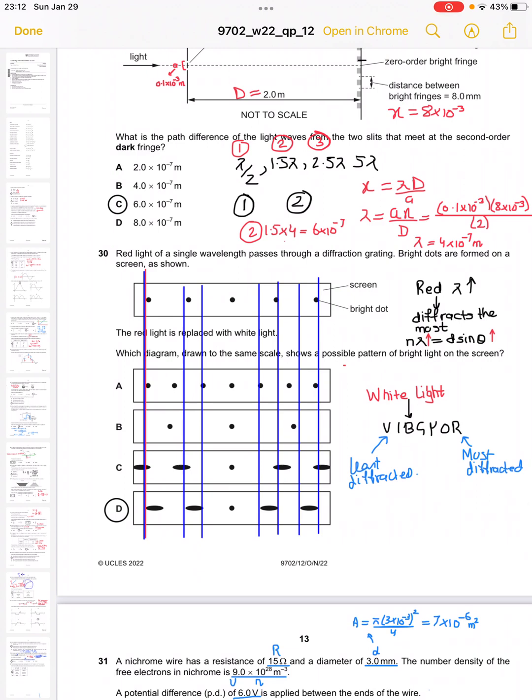Question 30 states that red light of single wavelength passes through a diffraction grating and bright dots are formed on the screen. This shows the diffraction pattern for red light, which deviates the most. The red light is then replaced by white light. Which diagram shows the scale with the possible pattern of bright light on the screen?